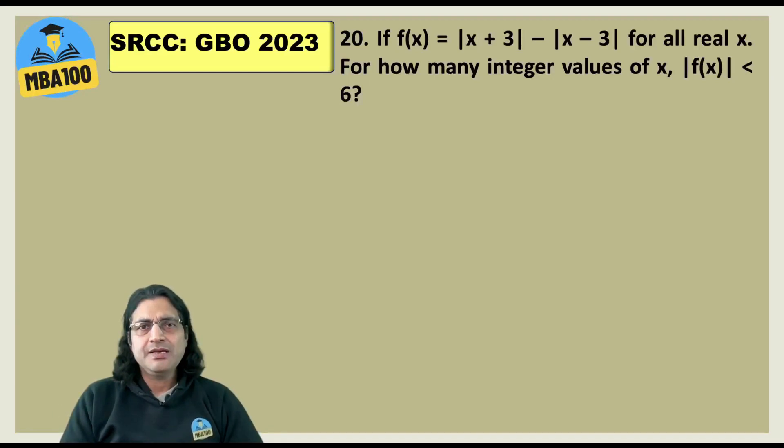Conceptual question. Here the mod of function of x will become a constant function if you are at 3 or minus 3 or to the left of minus 3 or to the right of 3. So of course the answer has to be to keep it less than 6 you need to be in between 3 and minus 3 and in between 3 and minus 3. There are only 5 integers minus 2 minus 1, 0, 1 and 2. That's the answer. A good question.